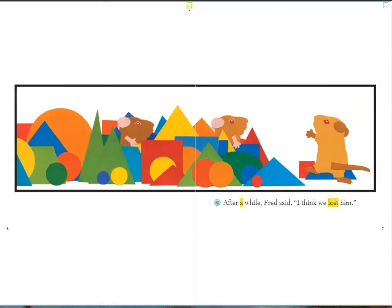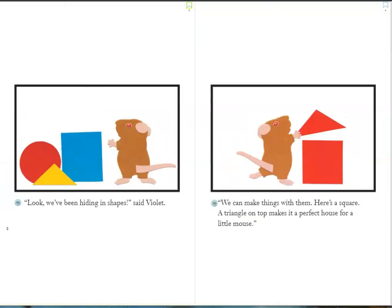After a while, Fred said, "I think we lost him." "Look, we've been hiding in shapes," said Violet. "We can make things with them. Here's a square. A triangle on top makes it a perfect house for a little mouse."